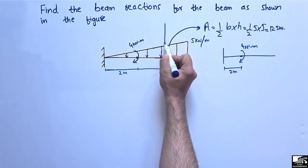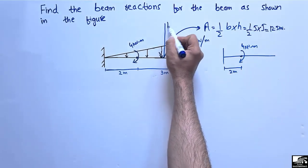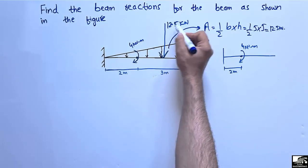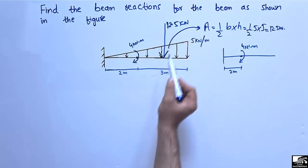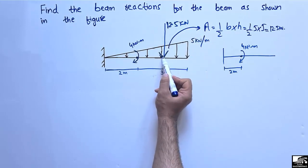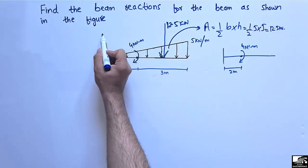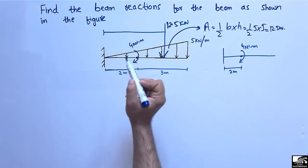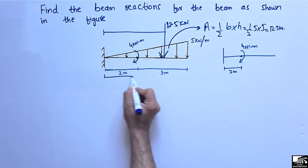So 12.5 kilonewtons is the concentrated load acting at the centroid of this triangle. This is how you convert a distributed triangular load into a concentrated load. The total length of the triangle base is 5 meters, and now we need to find the centroid location.